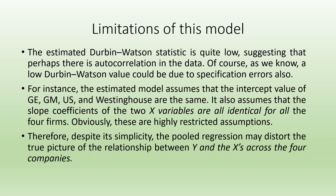Whenever your R-squared is greater than Durbin-Watson, you are facing a problem. It means the estimated Durbin-Watson statistic is quite low, suggesting perhaps there is autocorrelation in the data. A low Durbin-Watson value could be due to specification errors — here, we have not considered individual intercepts or slopes. For instance, the estimated model assumes that the intercept values of G, GM, US, and Westinghouse are the same, and that the slope coefficients of the two X variables are identical for all four firms. Obviously, these are very highly restricted assumptions, and therefore despite its simplicity, the pooled regression may distort the true picture of the relationship between Y and X across the four companies.